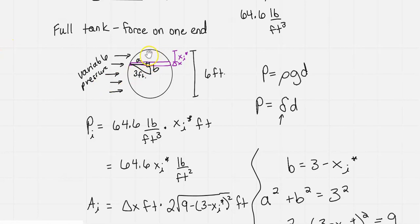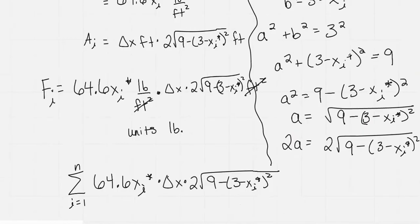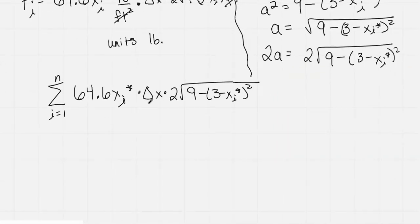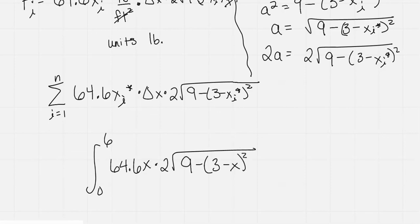The limits of integration are the depth from the top of the tank to the bottom of the tank because the tank is full. We go from 0 down to 6. My integral would be from 0 to 6 of 64.6x times 2 times the square root of 9 minus (3 minus x) squared dx.